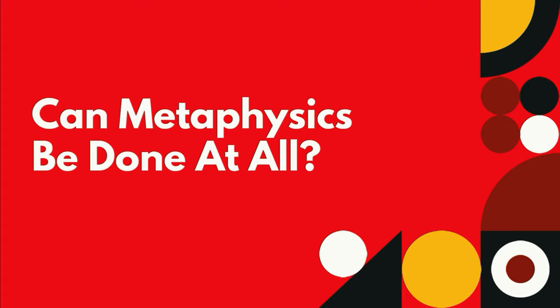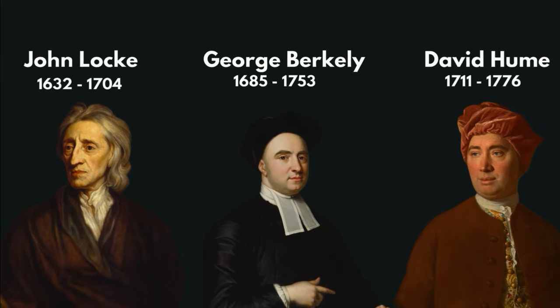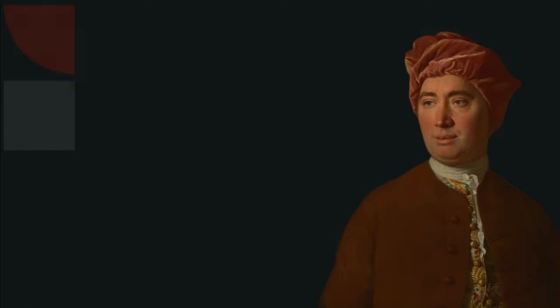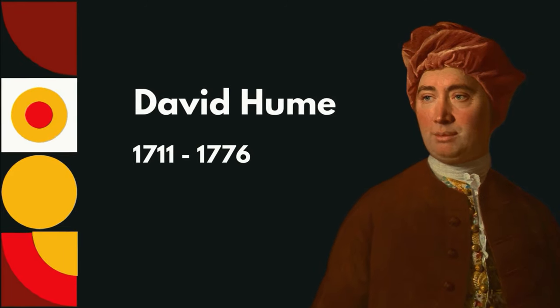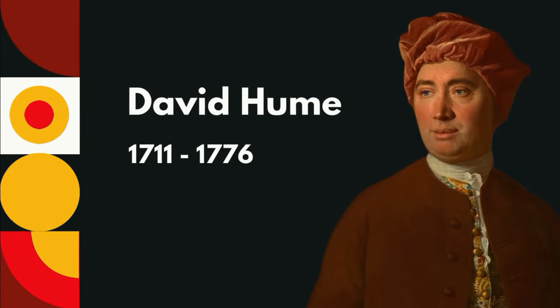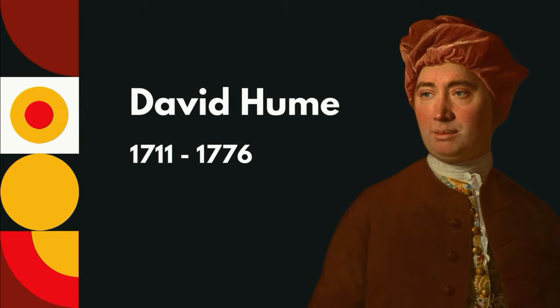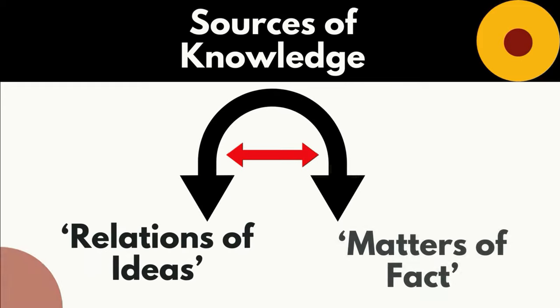Skepticism of the ability to do metaphysics only increased after Descartes with the British empiricists of the 17th and 18th century, including John Locke, George Berkeley, and David Hume. For instance, one of the great epistemological skeptics, 18th century empiricist Hume, argued that knowledge and truths could only come from two sources. These were relations of ideas or matters of fact in real existence, an idea referred to as Hume's fork.